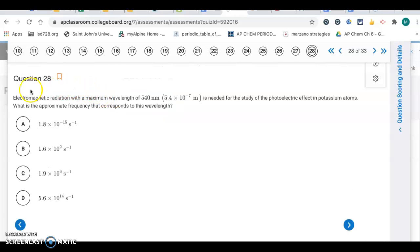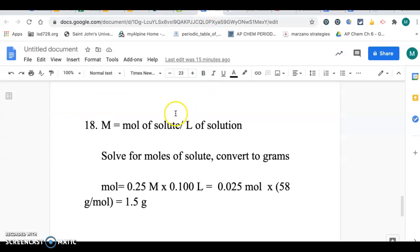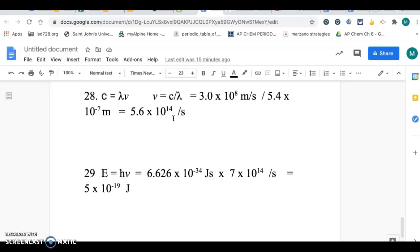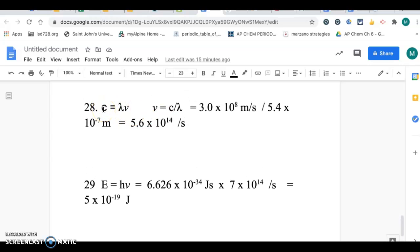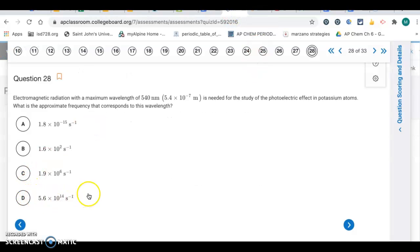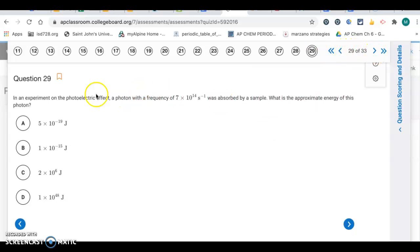Question 28. Electromagnetic radiation with a maximum wavelength of 540 nanometers is needed in the study of photoelectric effect in potassium atoms. Looking at my work page, number 28, it's right there. We're using the speed of light equation, solving for frequency, and we get 5.6 times 10 to the 14th. Going back to our choices, letter D, 5.6 times 10 to the 14th.